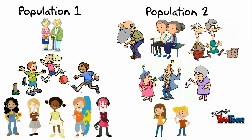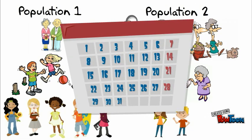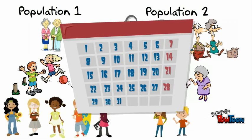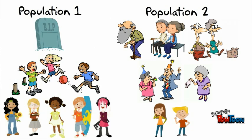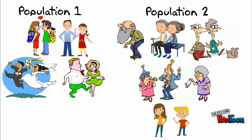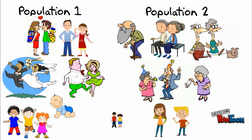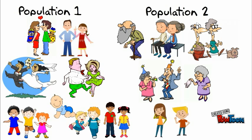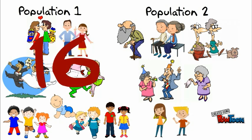Suppose we come back to these populations and look at them again in 20 years. In population 1, the 80-year-olds may have passed away, but all 8 children are still alive. Furthermore, they've grown up and started having children of their own. Let's just assume that each couple has 2 children. These children more than replace the ones who have died, so the population size has increased.